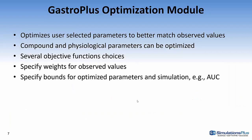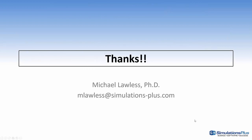This slide summarizes what we've discussed. The GastroPlus optimization module optimizes user-selected parameters to better match observed values. Both compound and physiological parameters can be optimized. There are several objective function choices, and you can specify weights for observed values and lower and upper bounds for optimized parameters and the simulation. Thank you for watching. If you have any questions, please send an email to mlawless@simulations-plus.com.